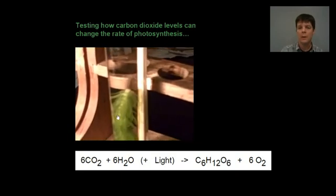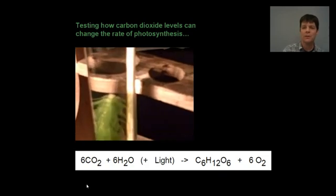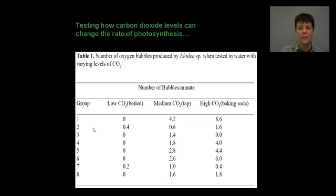So, by running the three trials, we're able to test how changing the level of CO2 is going to change the rate of photosynthesis. Now, I'm going to pause my video here. This is a sample data set, which gives us an idea of what the data from this experiment will look like when it's run by my classes or other classes.